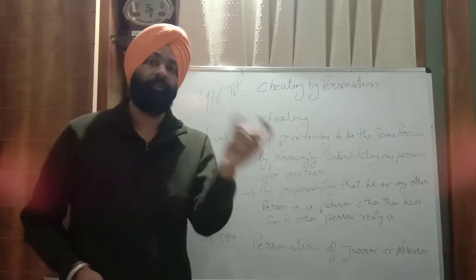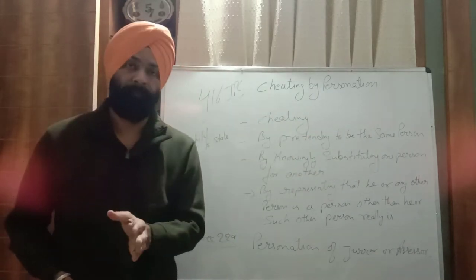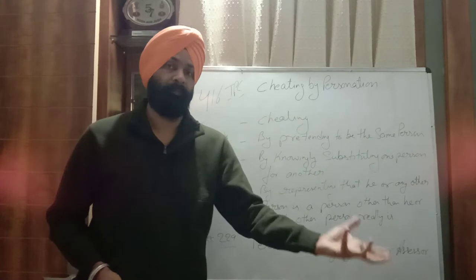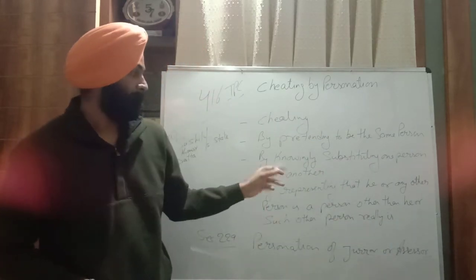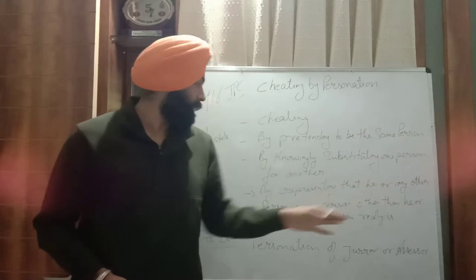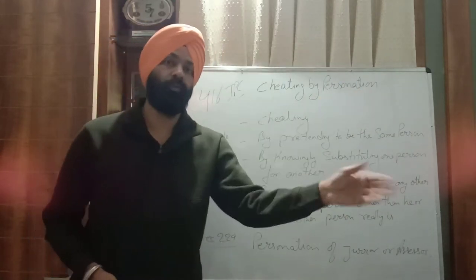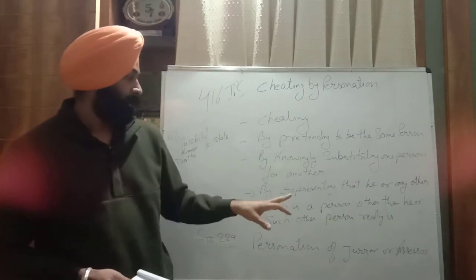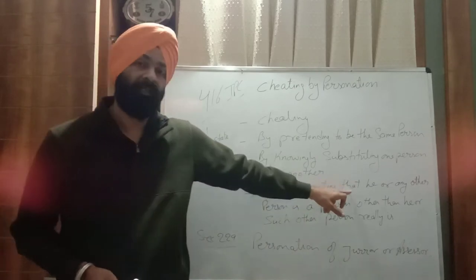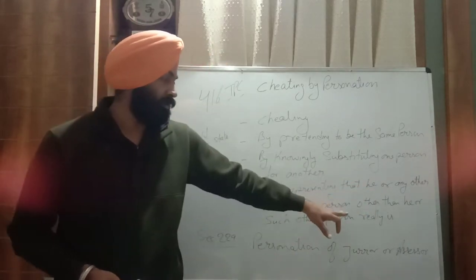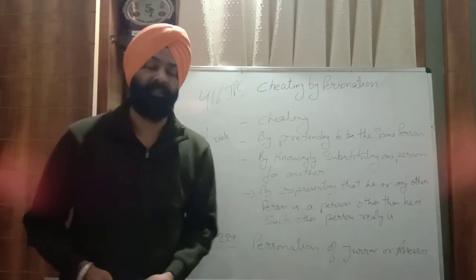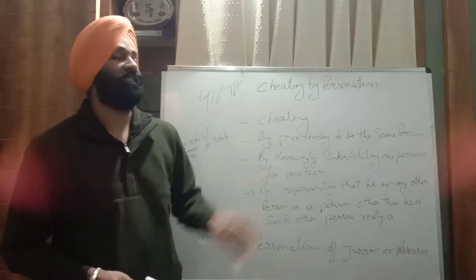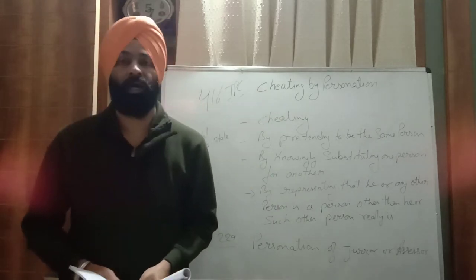Cheating as defined in Section 415 must first be proven. Second, cheating by pretending to be the same person. Third, by knowingly substituting one person for another. Or by representing that he or any other person is a person other than he or such other person really is. In Section 416 of the IPC, you can prove personation.